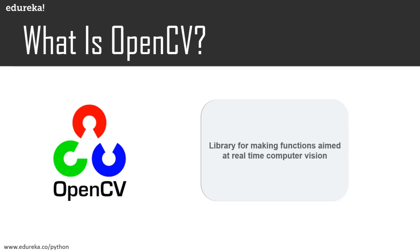Being a BSD-licensed product, OpenCV makes it easy for businesses to utilize and modify the code. The library has more than 2,500 optimized algorithms, which includes a comprehensive set of both classic and state-of-the-art computer vision and machine learning algorithms. OpenCV has more than 47,000 people in its user community and an estimated number of downloads exceeding 18 million. The library is used extensively in companies, research groups, and by governmental bodies as well.